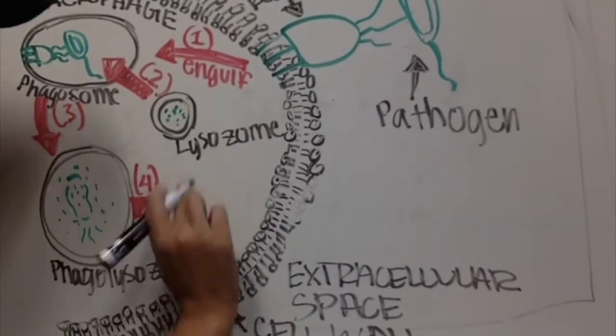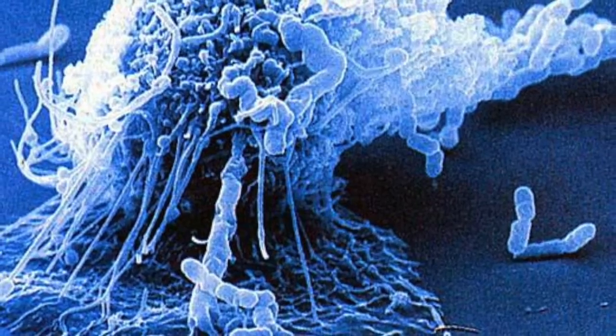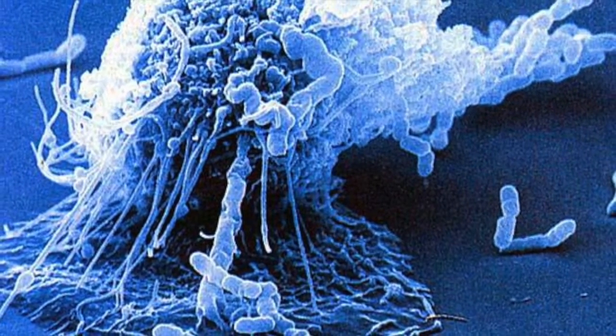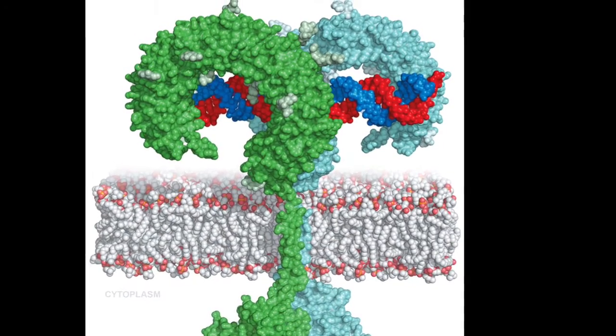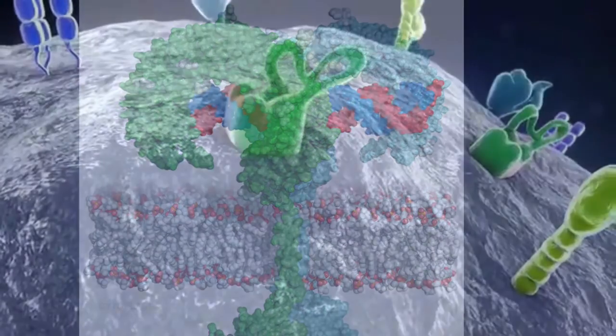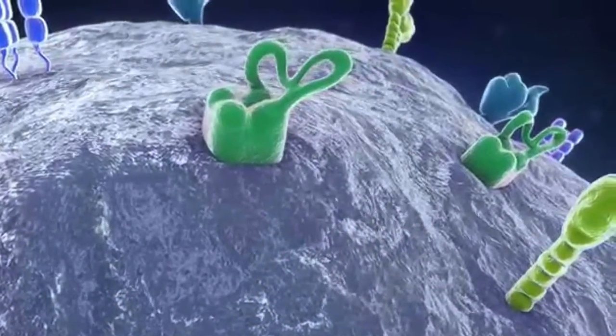Now that we've explained how scavenger receptors play an important role in the body's innate immune response, let's compare them to toll-like receptors. Toll-like receptors, or TLRs for short, are another important class of receptors found on the membranes of many innate immune cells.